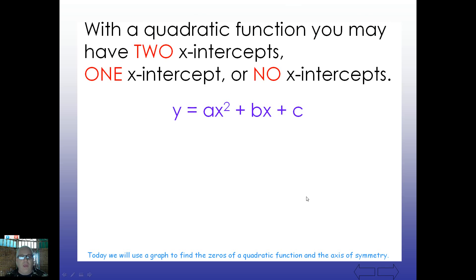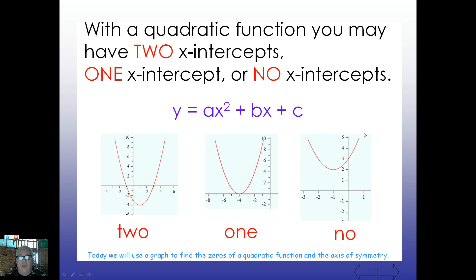With a quadratic function, you may have two x-intercepts, one x-intercept, or maybe even zero. Remember that this is our general form of a quadratic equation. Here's an example of two x-intercepts. Notice it passes through the x-axis how many times? Twice. This one here comes down, touches the x-axis at one point, and takes off again. So this has one x-intercept, or zero.